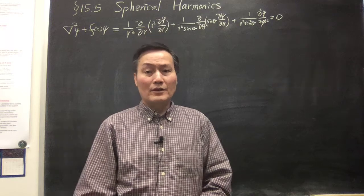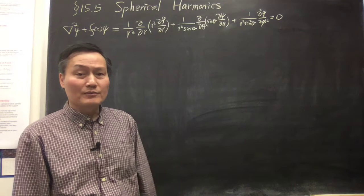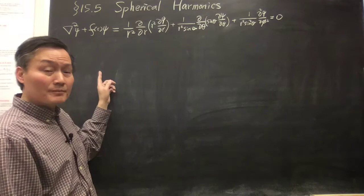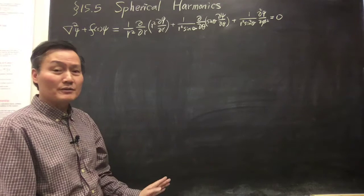We are in section 15.5 of spherical harmonics. We go back to the original problem of solving a partial differential equation of this form — a second order PDE with a Laplacian and a function that depends only on the radial coordinate. We use spherical coordinates and write down the Laplacian explicitly.